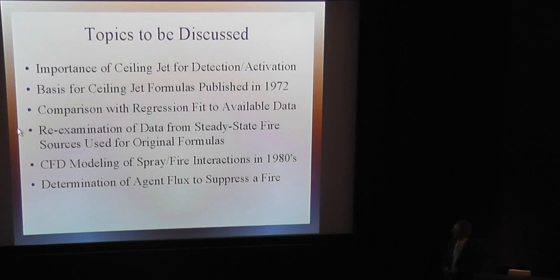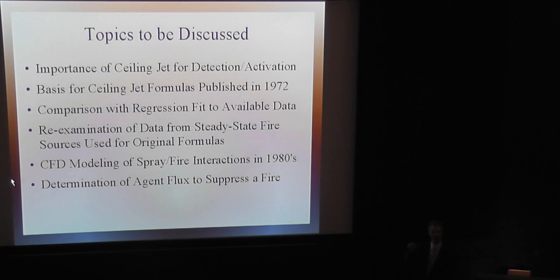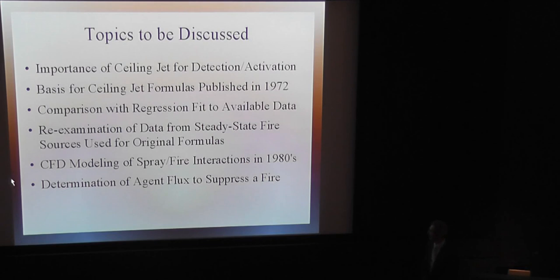I've re-examined some of the data that I still have available — the most reliable part of that data — to see if we can come up with a new regression fit, a new formula for the ceiling jet as far as velocity and temperature are concerned. Then I wanted to look at some of the work I had done in the early 1980s. Now that you can predict when the ceiling jet will activate a suppression device, how is that water going to interact with the fire? I did some CFD modeling of that back in the early 1980s, and we'll see what that looks like.